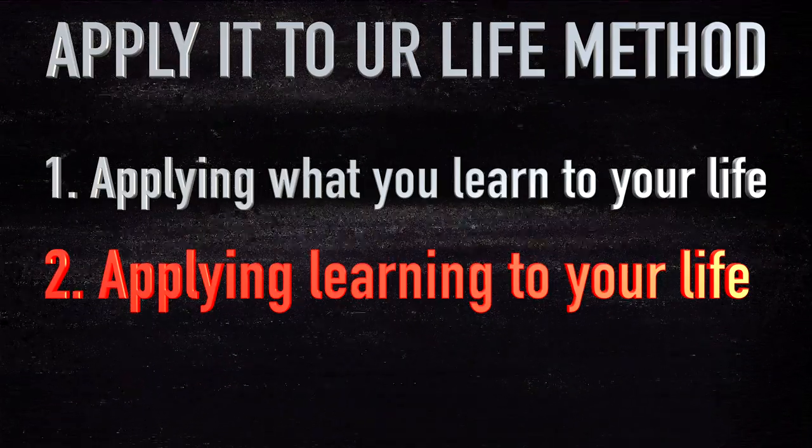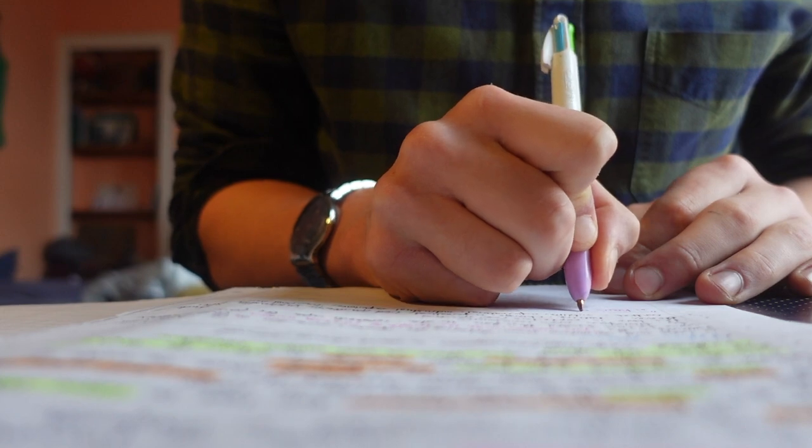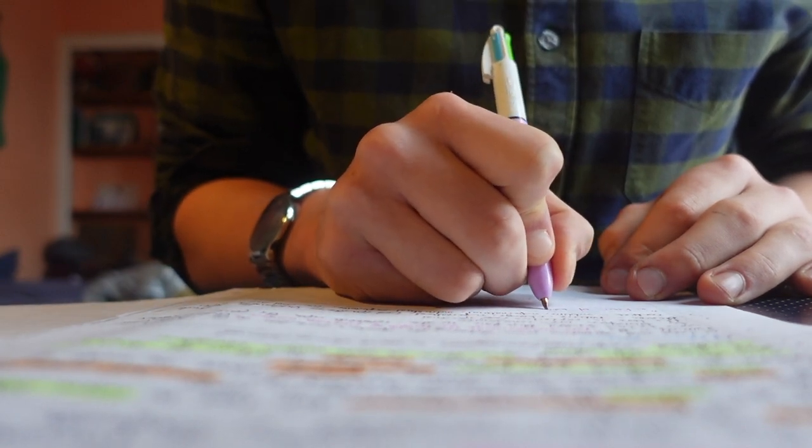But what about the bigger stuff? What about the bigger chunks of knowledge, the difficult abstract concepts that you really cannot apply to your life in the outside world? Well, that's where the second part of my learning method comes in: applying learning to your life. This is where I'm going to go all philosophical on you. The main premise is that you should live your life as an eternal student. You should always be trying to learn, because we are human beings and essentially we are born, we learn things, and then we die.